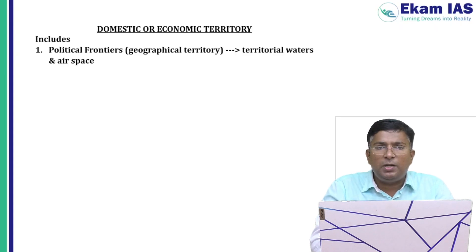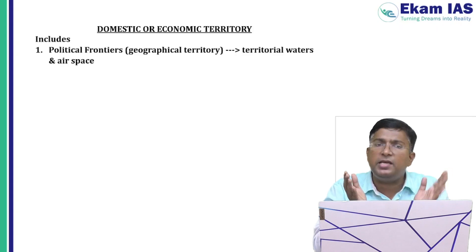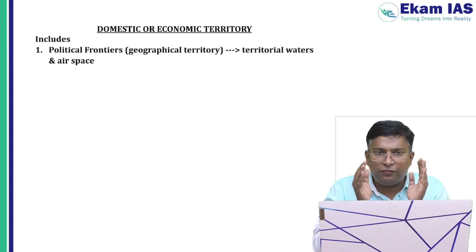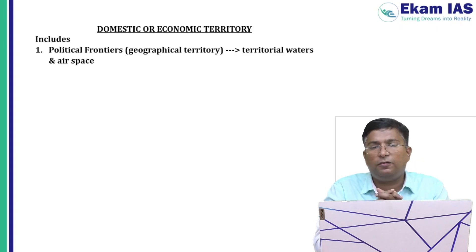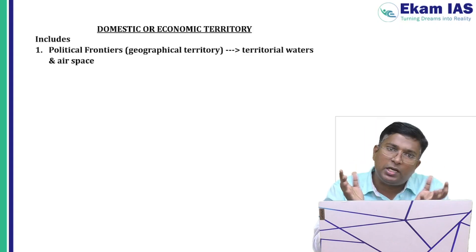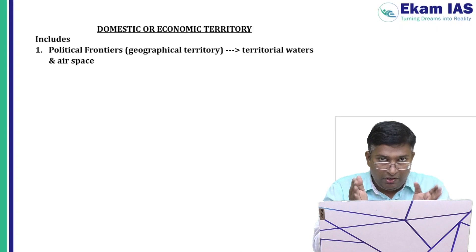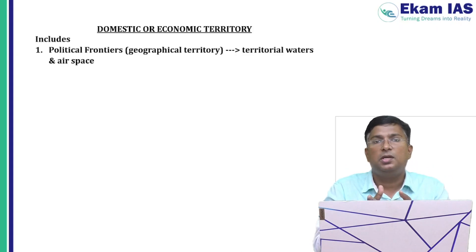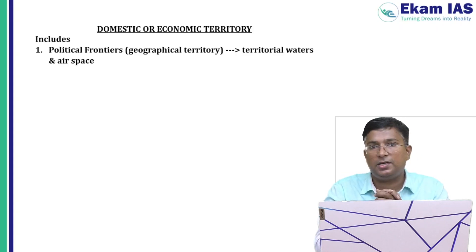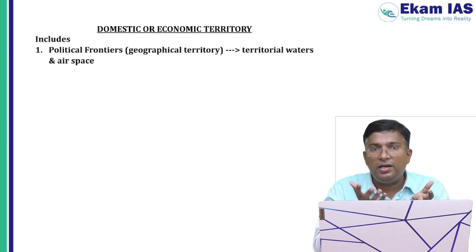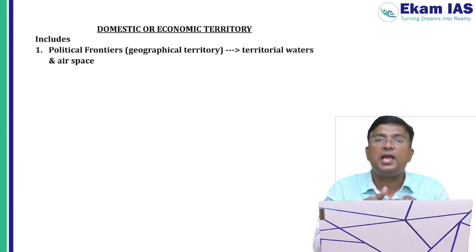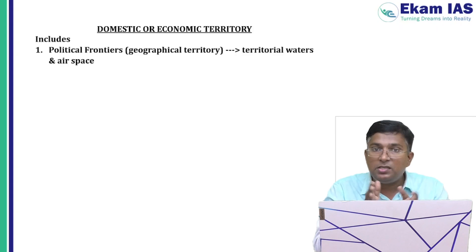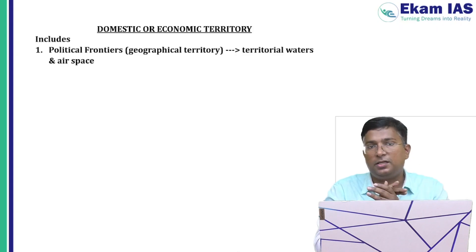The first component of domestic territory is the normal political frontier — the normal geographical territory of any country. When we say normal political frontier or normal geographical territory, it also includes the territorial waters of that country as well as the airspace of that country. So the political frontier, including airspace and territorial waters, is a major component of domestic territory.